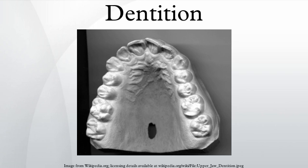Dental eruption sequence: the order in which teeth emerge through the gums is known as the dental eruption sequence. Rapidly developing anthropoid primates such as macaques, chimpanzees, and Australopithecines have an eruption sequence of M1, I1, I2, M2, P3, P4, C, M3, whereas anatomically modern humans have the sequence M1, I1, I2, C, P3, P4, M2, M3. The later that tooth emergence begins, the earlier the anterior teeth appear in the sequence.